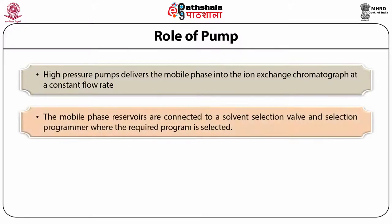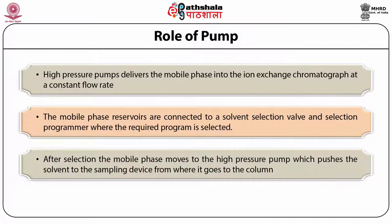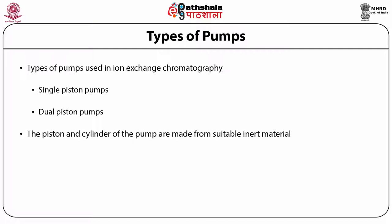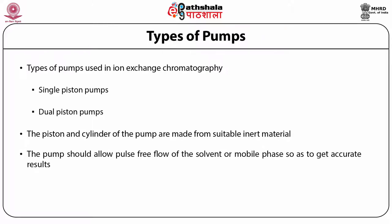The mobile phase reservoirs are connected to a solvent selection valve and a selection programmer. During the chromatographic procedure, we select a program according to our need, by which the solvents from the mobile phase reservoirs are selected and pushed to the sampling device, from where it goes to the Ion Exchange column. The pumps used in Ion Exchange Chromatography can be either single piston or dual piston pumps. The piston and cylinder used in the pump are made from inert material, because the mobile phase used in Ion Exchange Chromatography contains ions which can be corrosive.